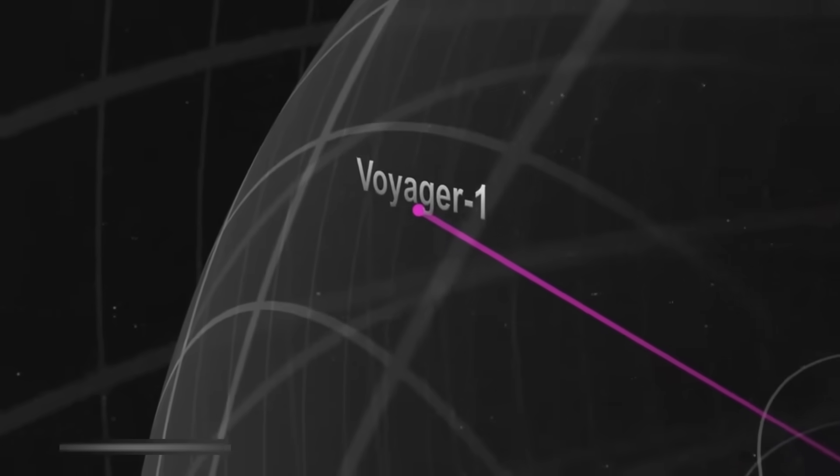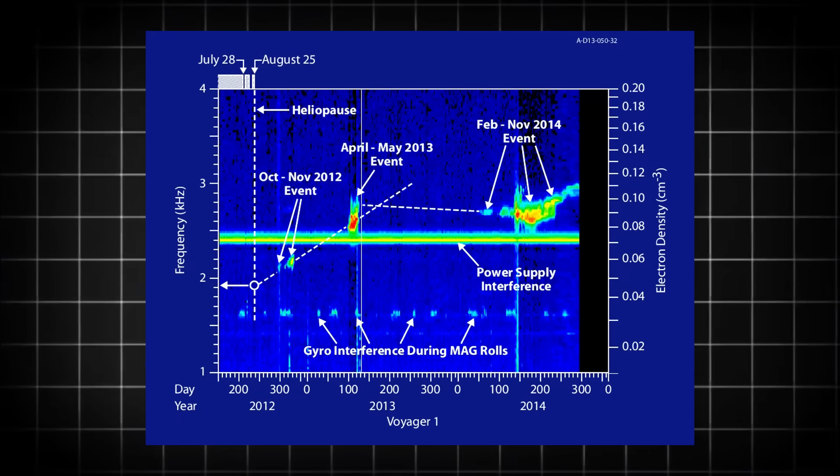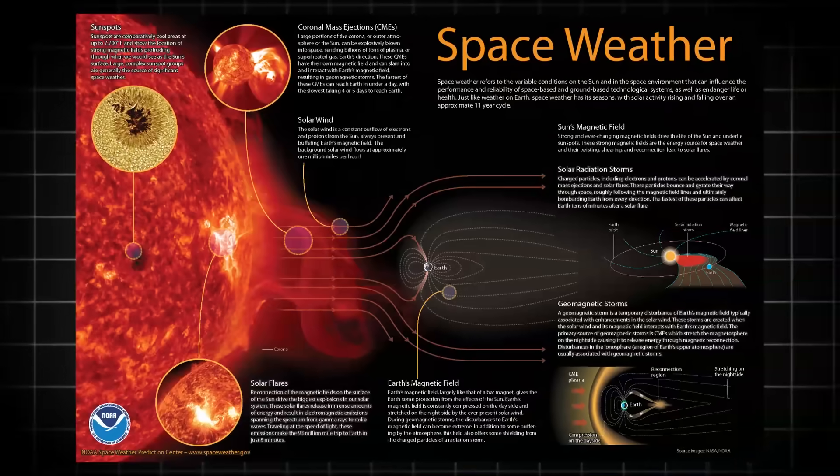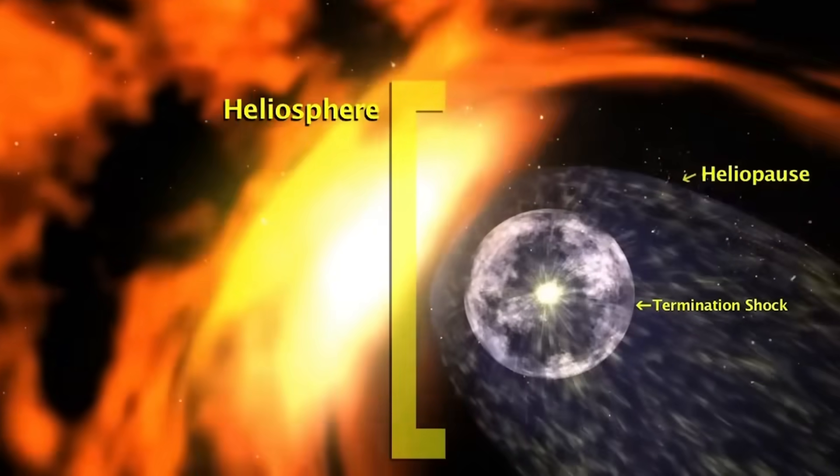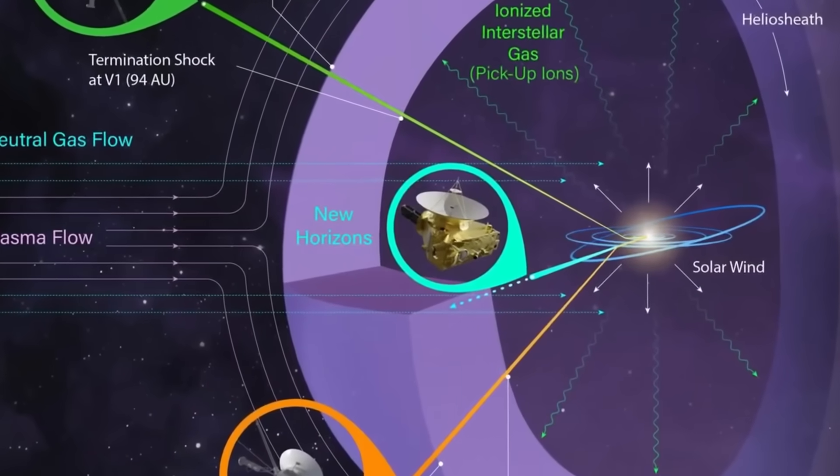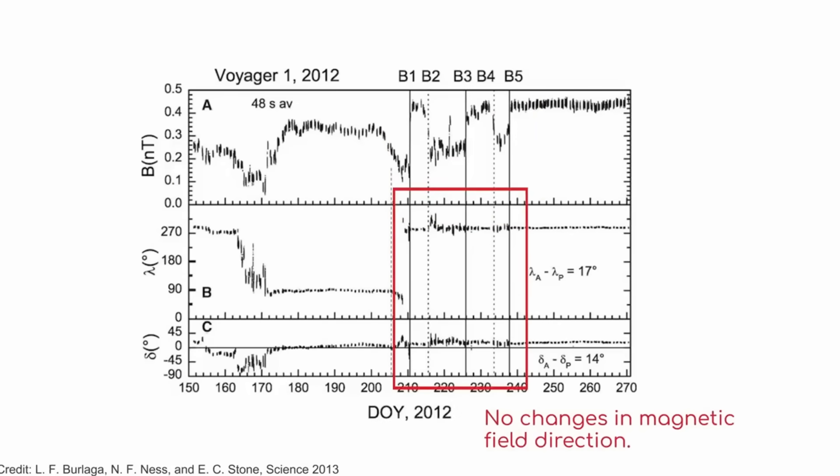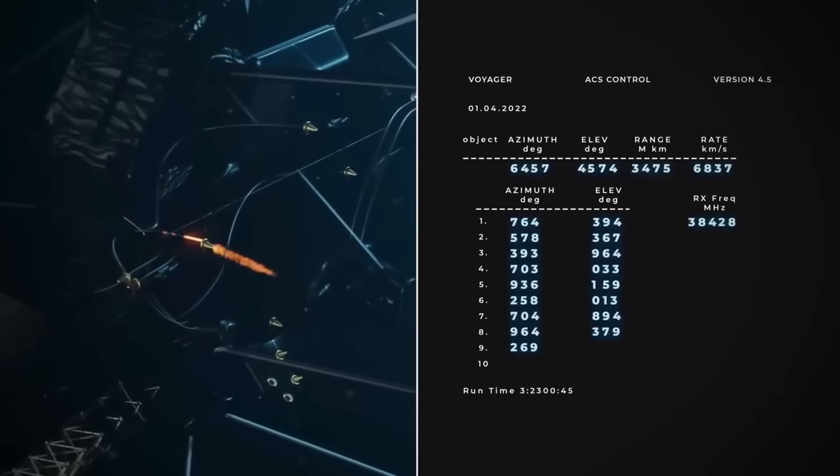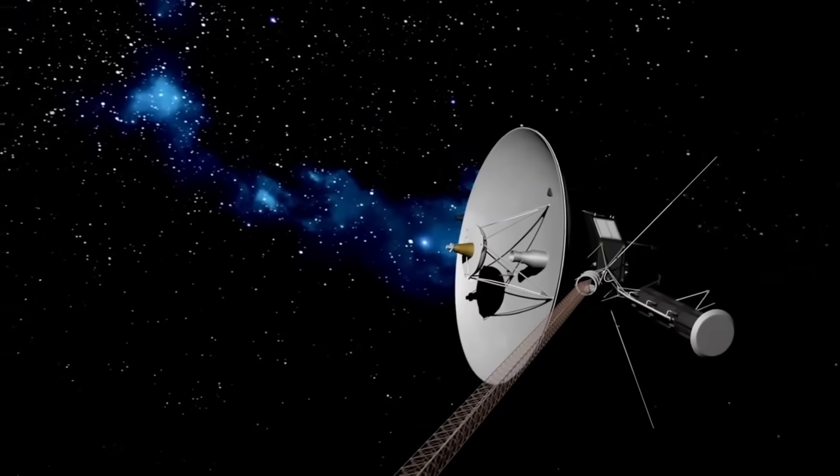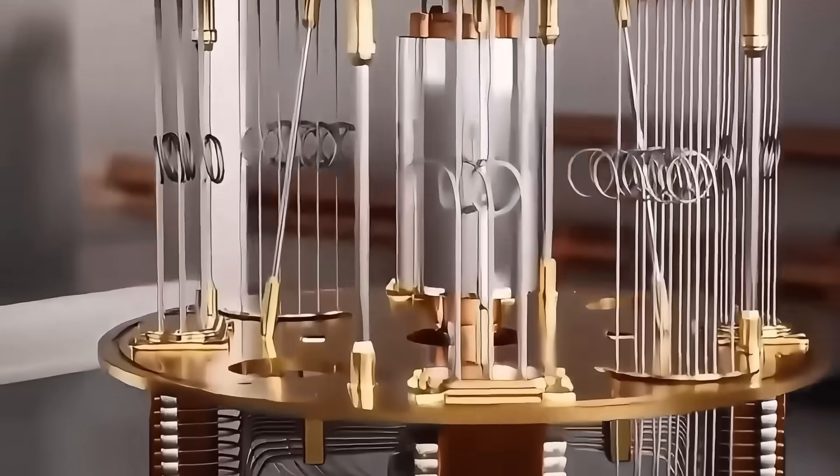Its radio signal, incredibly faint, takes over 22 hours to reach us. The spacecraft carries the famous golden record, a time capsule containing sounds and images of Earth. It was designed as humanity's message to any intelligence that might find it. When communication problems emerged in late 2023, engineers detected what they called a repeating pattern of ones and zeros. NASA traced this to a failing memory chip. By April 2024, they had successfully rerouted the spacecraft's code into spare memory. Voyager resumed normal communication, continuing its mission as humanity's most distant explorer. The deep space network's massive antennas, including the 70-meter dish in Canberra, Australia, remain our only link to this ancient traveler.